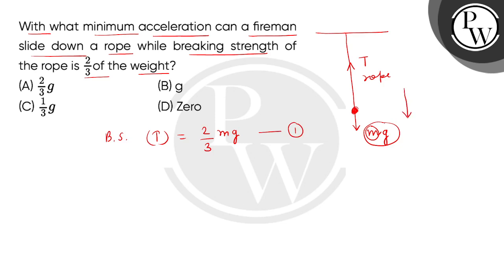Now the fireman slides down, so we believe that the acceleration A is the driving force MA. When we use Newton's second law, this is MA equals to Mg minus T. We use equation 1.